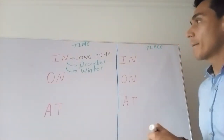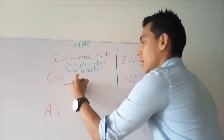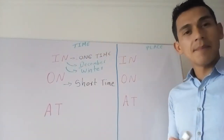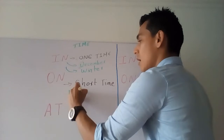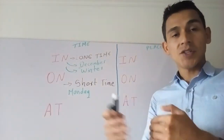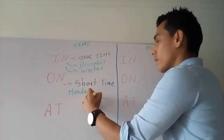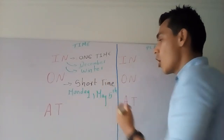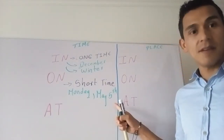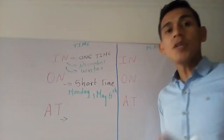On the other hand, we use 'on' for a short period of time. For example, we say 'on Monday' — we don't say 'in Monday' — because Monday is just one day, a short period. We also say 'on May 5th' because it's only one day.